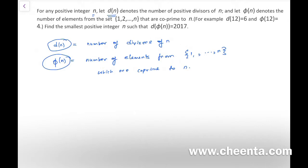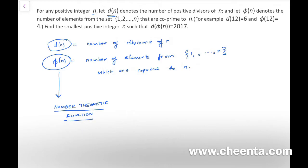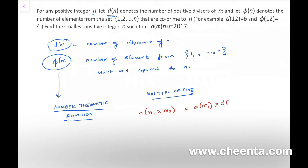If you are not familiar with these two functions d(n) and φ(n), this problem could be a little challenging. These are called number theoretic functions and they have their own formulas and beautiful properties. For example, each of these functions is multiplicative in nature — meaning d(m₁·m₂) = d(m₁)·d(m₂) if gcd(m₁, m₂) = 1.